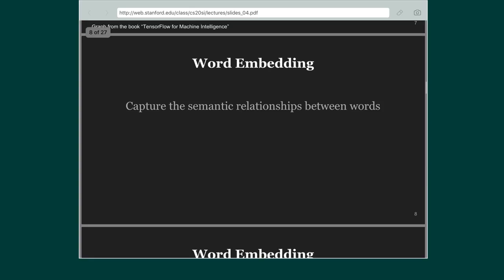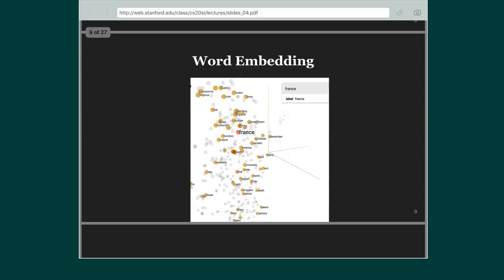Word embeddings capture the semantic relationships between words. When we want a neural network which takes words as input, as is the case in NLP, we need a way to represent those words. Words are strings — neural networks can only take numbers — so we need to represent words as word embeddings, which are a proxy for words. The goal is to capture as much of the semantic relationship between various words as possible.